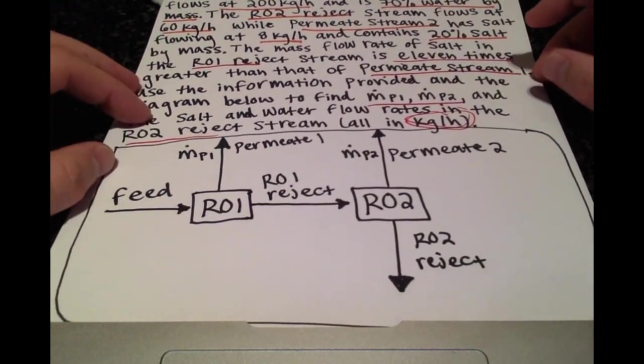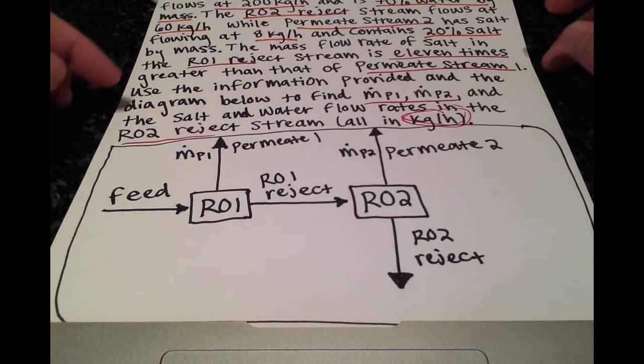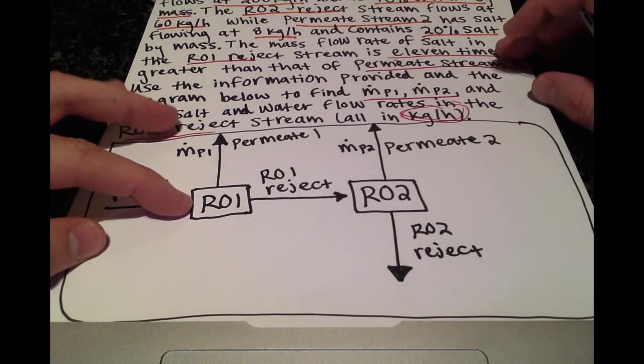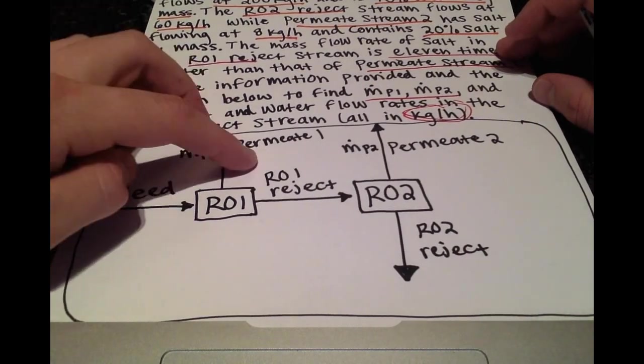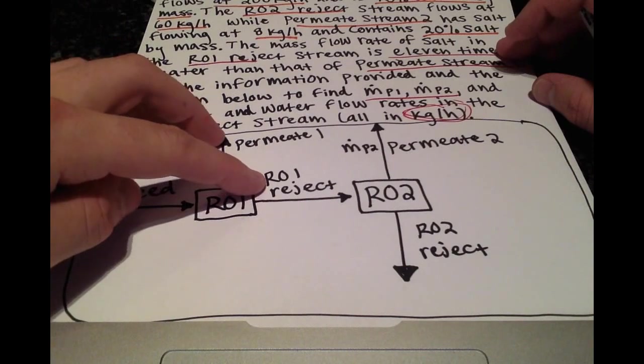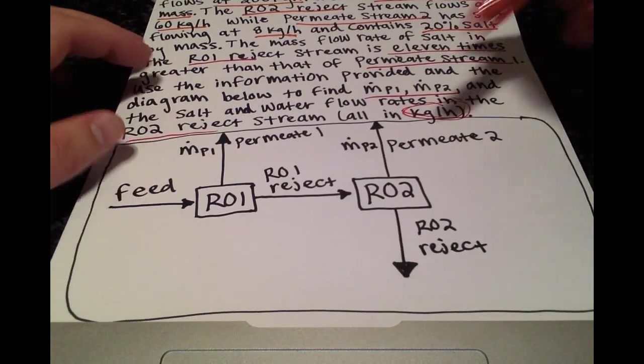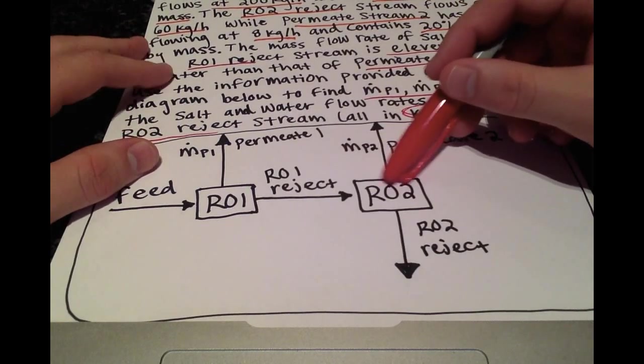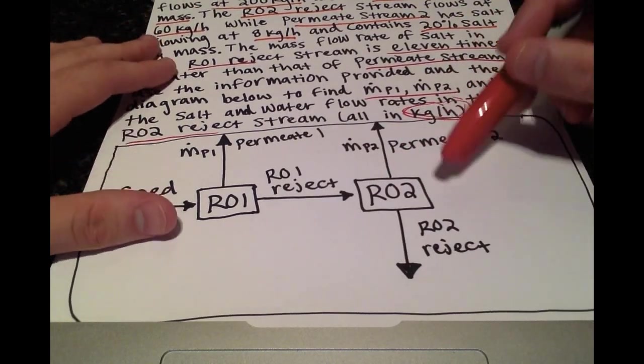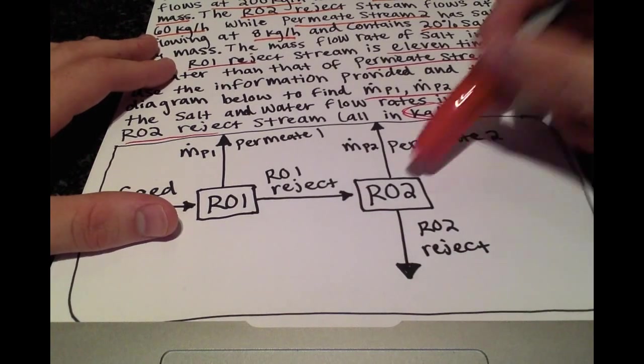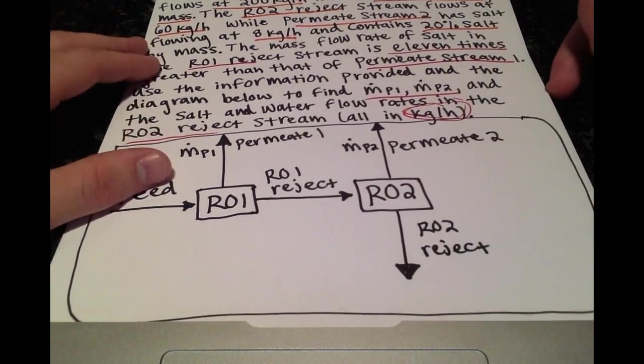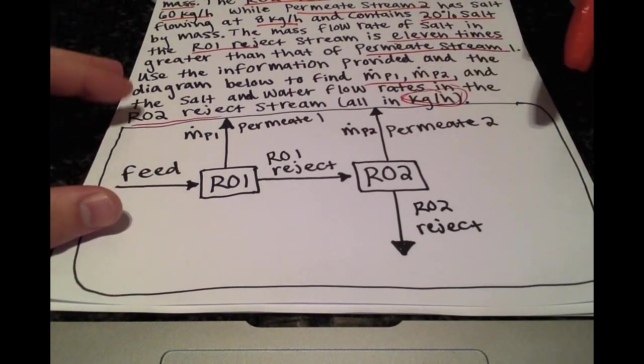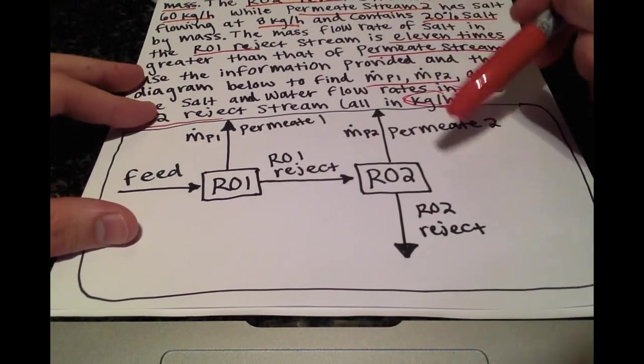This picture just clarifies what they were saying above. We have a feed stream entering reverse osmosis step number one and coming out we have a permeate stream and an RO1 reject stream. The reject stream is going into the second reverse osmosis system which also produces a permeate stream and an RO2 reject stream. I've created another diagram with all of this information included.